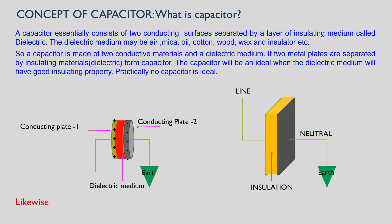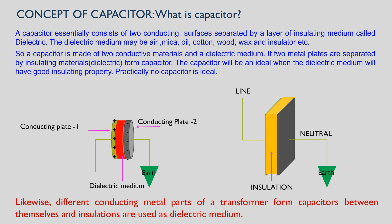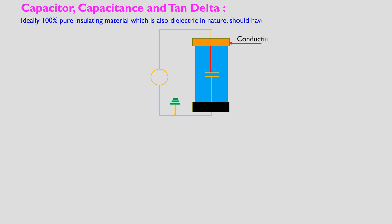Likewise, different conducting material parts of a transformer and insulation form capacitors. Ideally, 100% pure insulating material which is also dielectric in nature should mean the capacitor has only capacitive component of current passing through it.